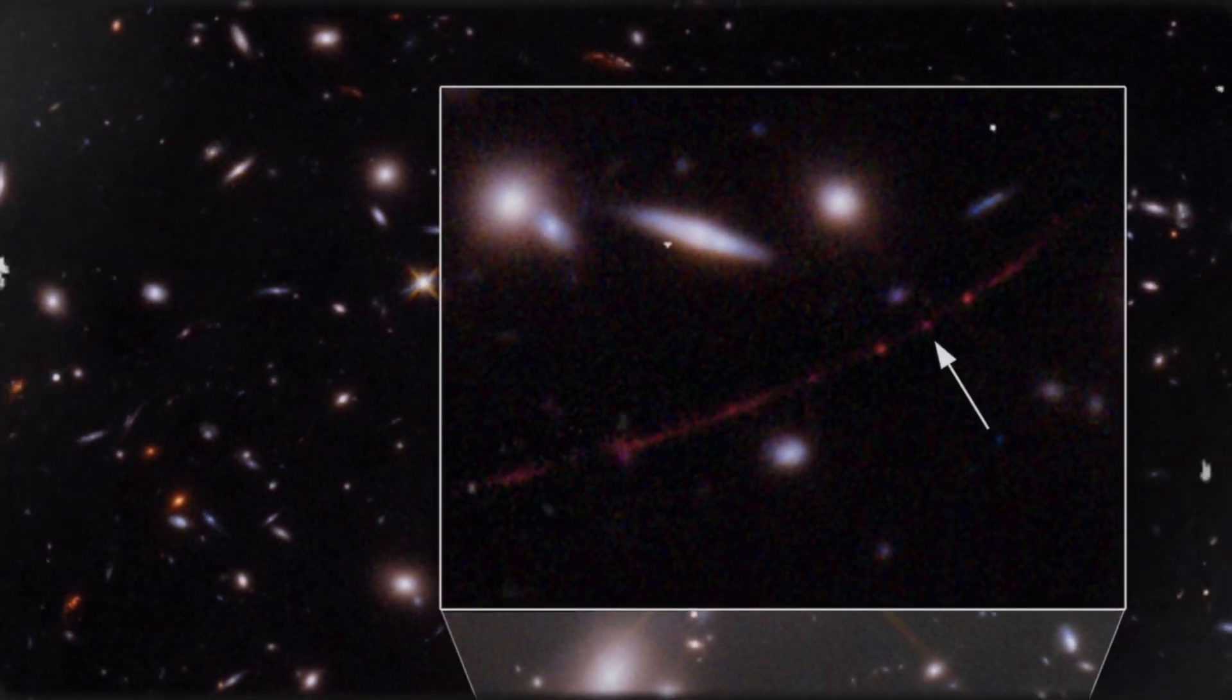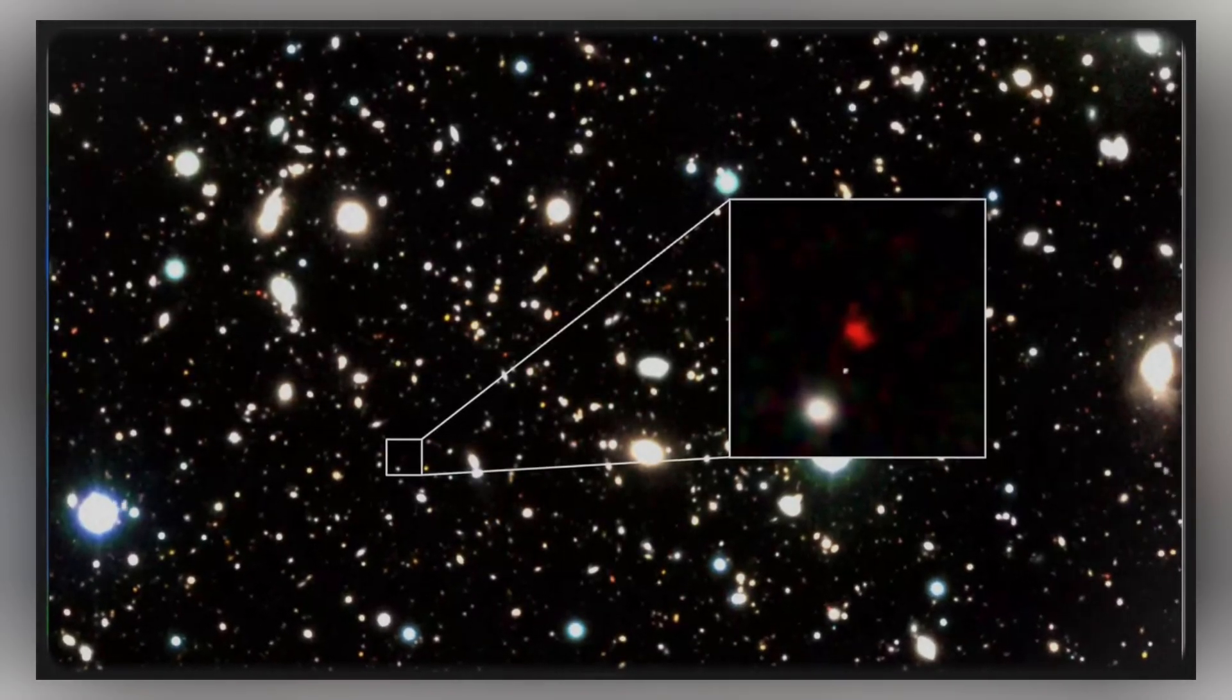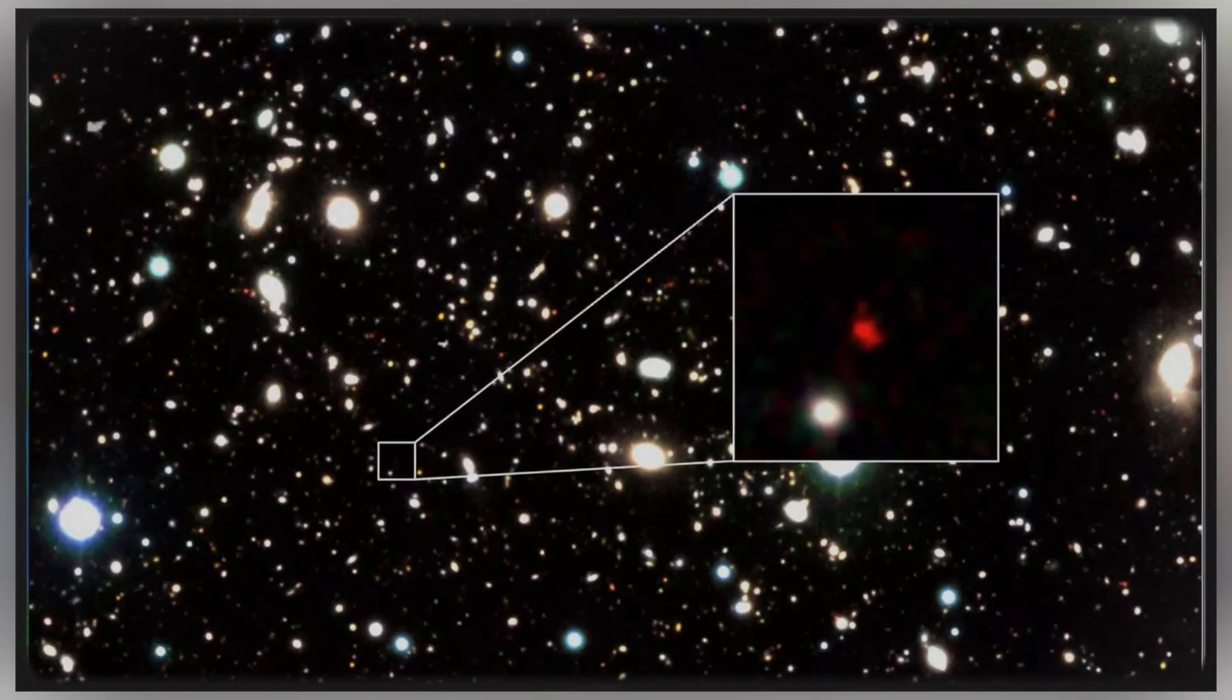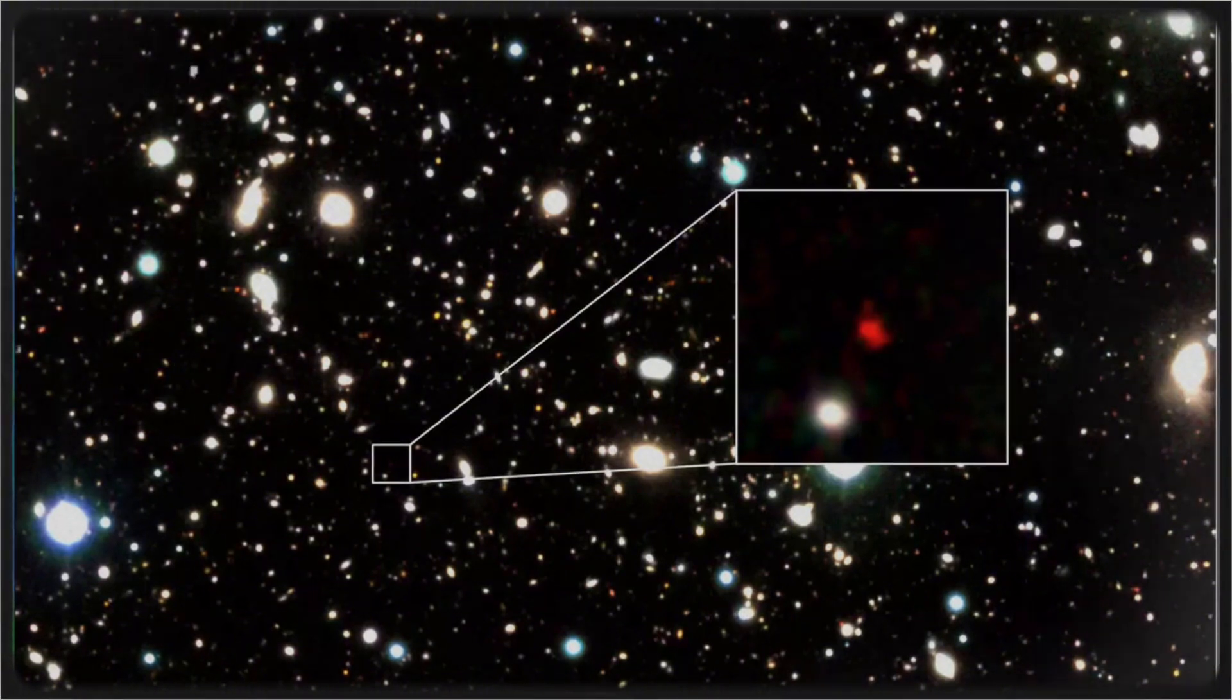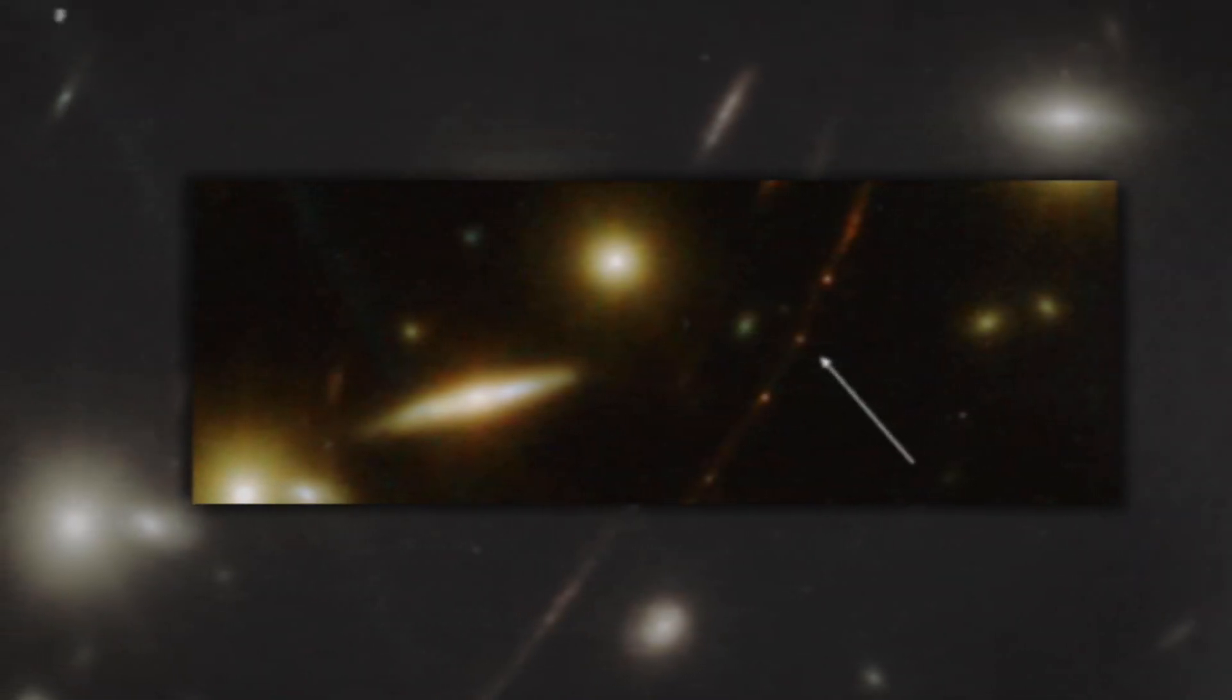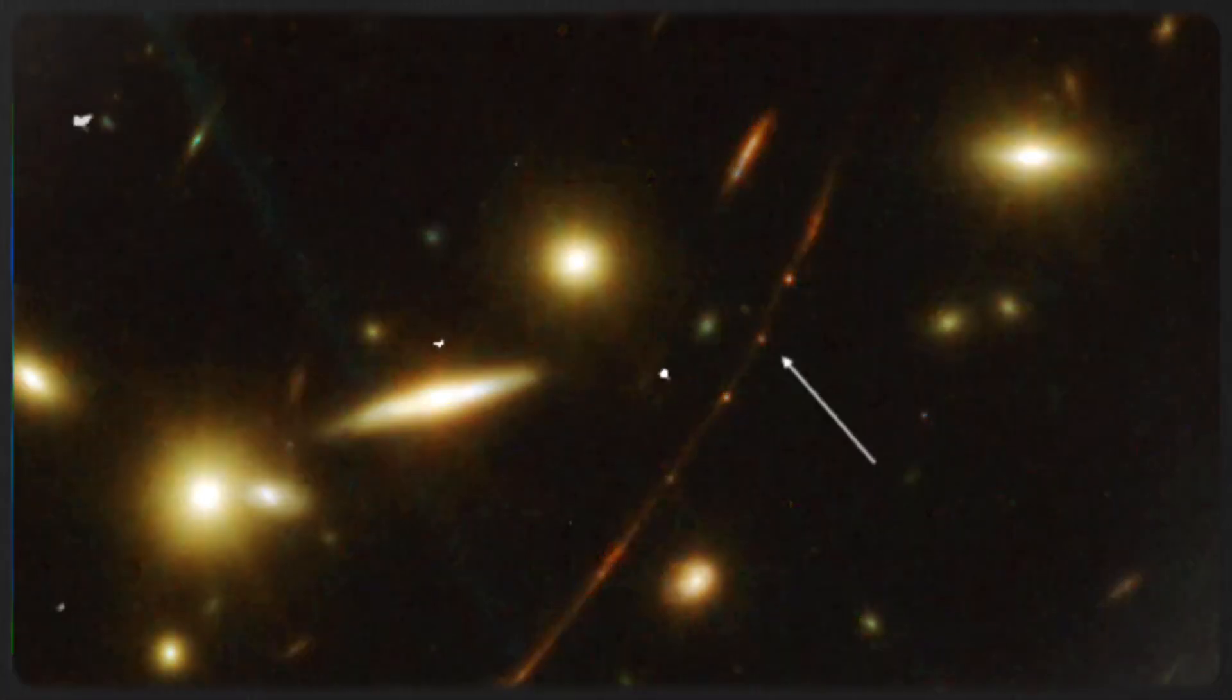Picture this: a single star suddenly becomes the universe's biggest celebrity. Eärendel lit up headlines and captured imaginations worldwide. This ancient star, the oldest one we've observed, was supposed to help answer the monumental question of how the universe began. Scientists believe that around 13 billion years ago, the cosmic dawn arrived, when the dark universe was illuminated by the first generation of stars.